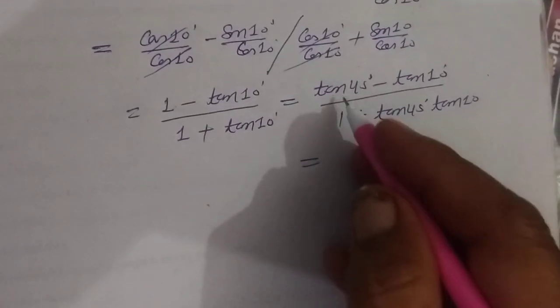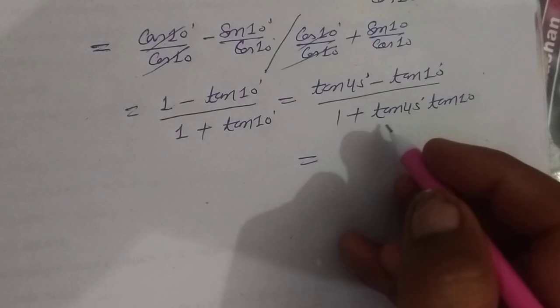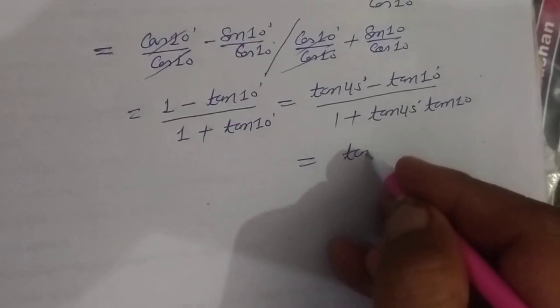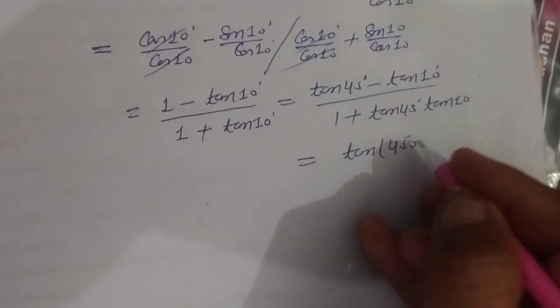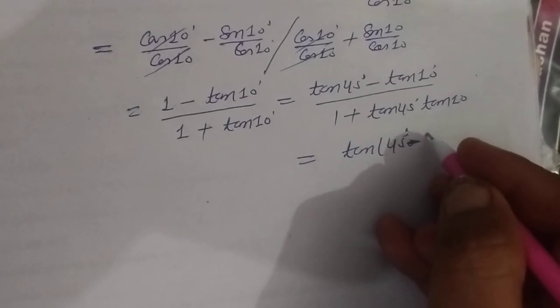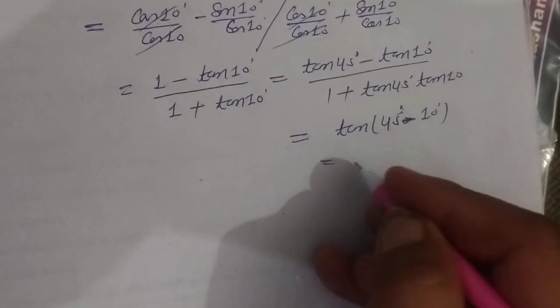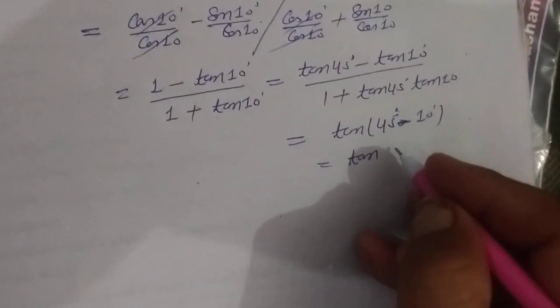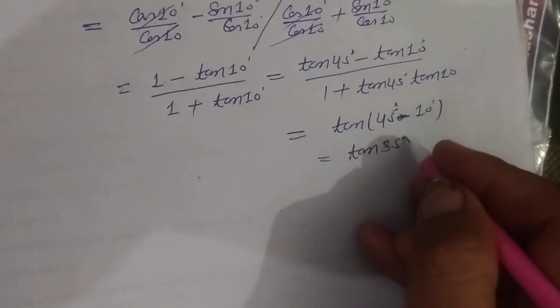Now this becomes tan A minus tan B upon 1 plus tan A tan B, so this is tan A minus B. So tan 45 minus 10, this is tan 35.